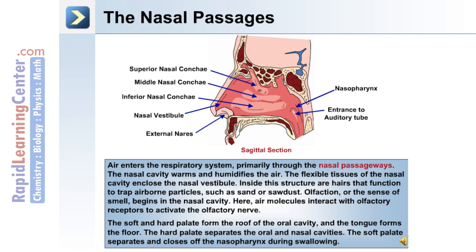Olfaction, or the sense of smell, begins in the nasal cavity. Here air molecules interact with olfactory receptors to activate the olfactory nerve. The soft and hard palate form the roof of the oral cavity and the tongue forms the floor. The hard palate separates the oral and nasal cavities, and the soft palate closes off the nasal pharynx during swallowing.